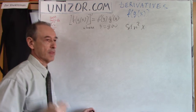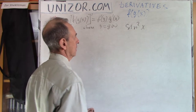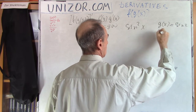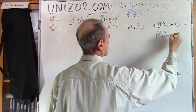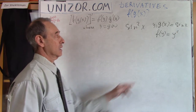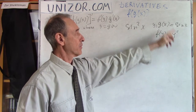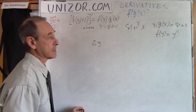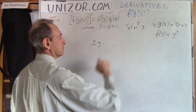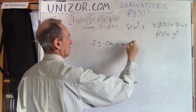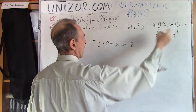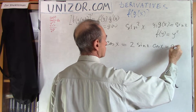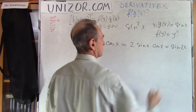So, sine squared of x. What kind of functions do we have here? g of x is equal to sine x, and f of y is equal to y squared. So, first we do sine, and then we square the result — we separately take the derivatives. The derivative of f is 2y. The derivative of y squared is 2y. The derivative of sine is cosine. So, it's 2 times y, which is sine x, times cosine x — which, by the way, happens to be sine of 2x.